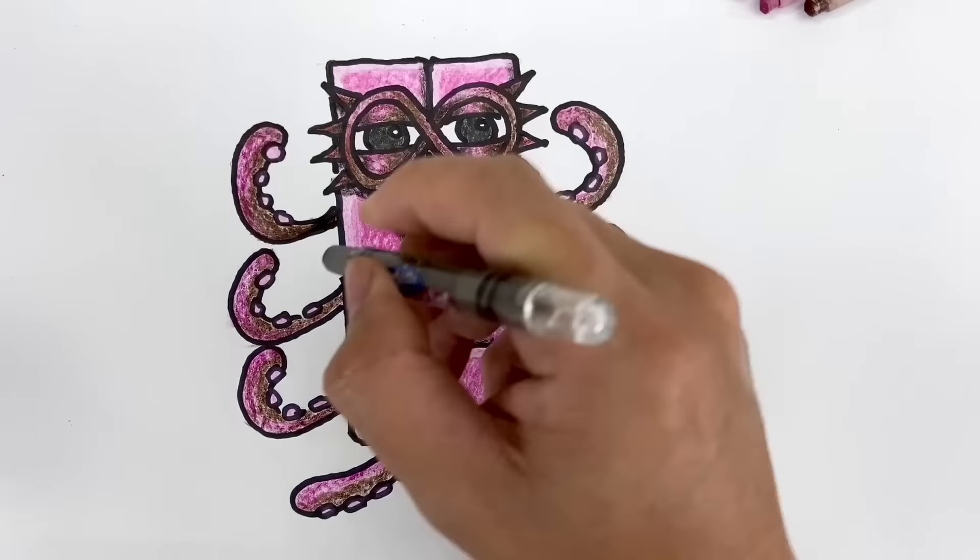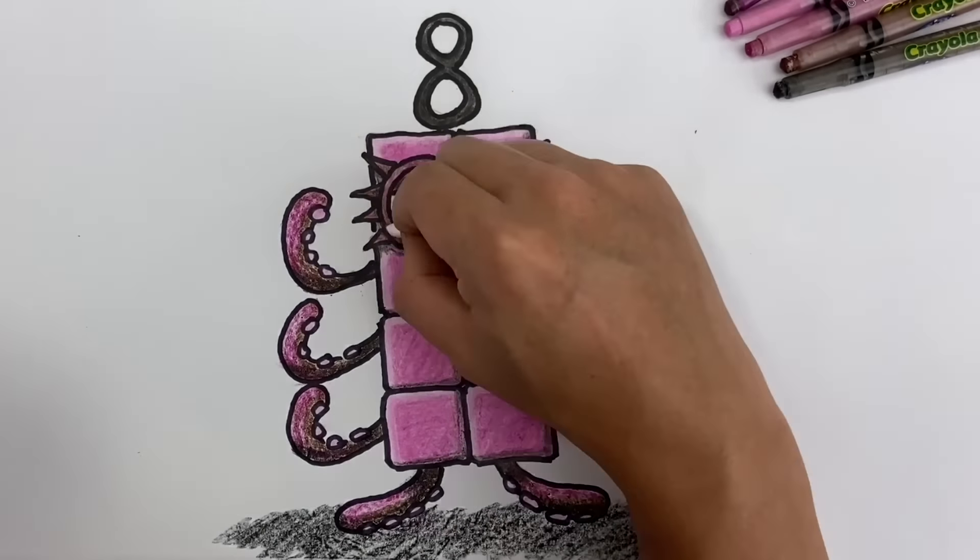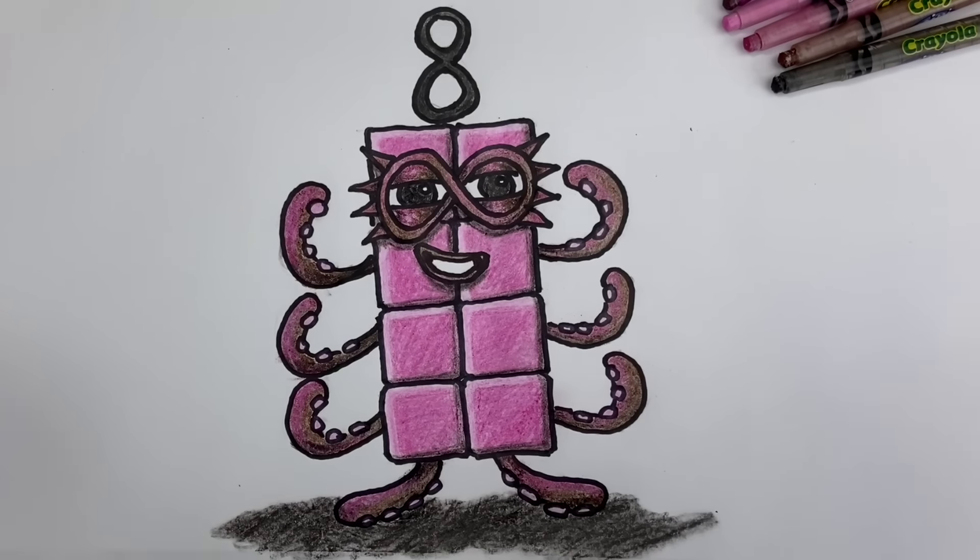You can stop here or you can use a cotton bud to blend in the colors. Just rub the tip across the colors, starting from the lighter color to the darker colors, to smoothen them out. And there you have it! Number block 8! Doesn't he look great?